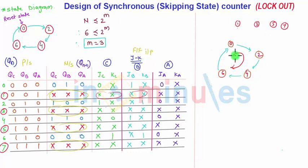That is nothing but 0, 2, 4, 6. And this kind of condition is called as lockout. The counter will move in the invalid states, that is nothing but 1, 3, 5, 7, and it will never come to the 0, 2, 4, 6.